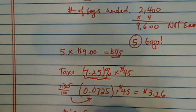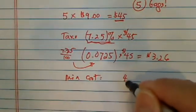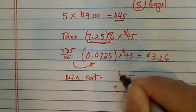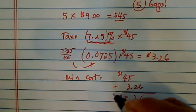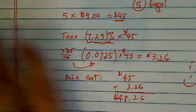So minimum cost, you're going to add them up. He has to pay the tax on top of the cost for his grass, so it's $48.28. Hope this helps and have a confident day.